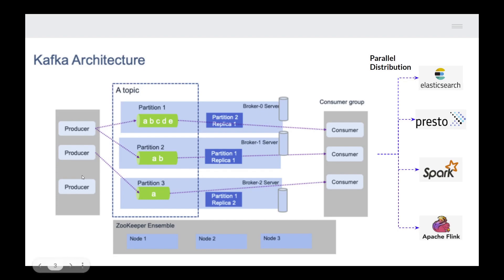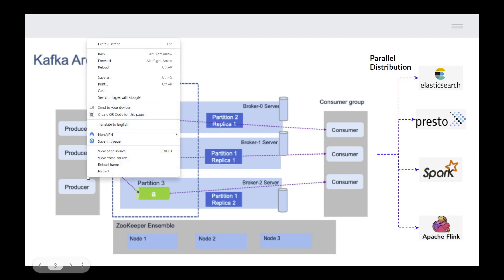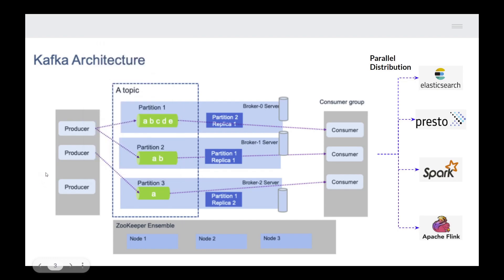Let's start with the producer. The producer is the source — we produce events one by one in an orderly manner from the producer. Once generated, the messages will be forwarded to the consumer. However, they cannot be forwarded directly — they need an intermediary because the producer doesn't know about the consumer and the consumer doesn't know about the producer.